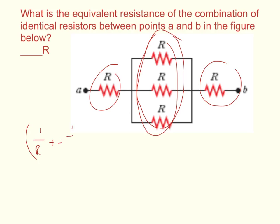So anyhow what you get is you get 3 over R and you take the inverse of that, so to the negative 1 power, and you get R over 3.